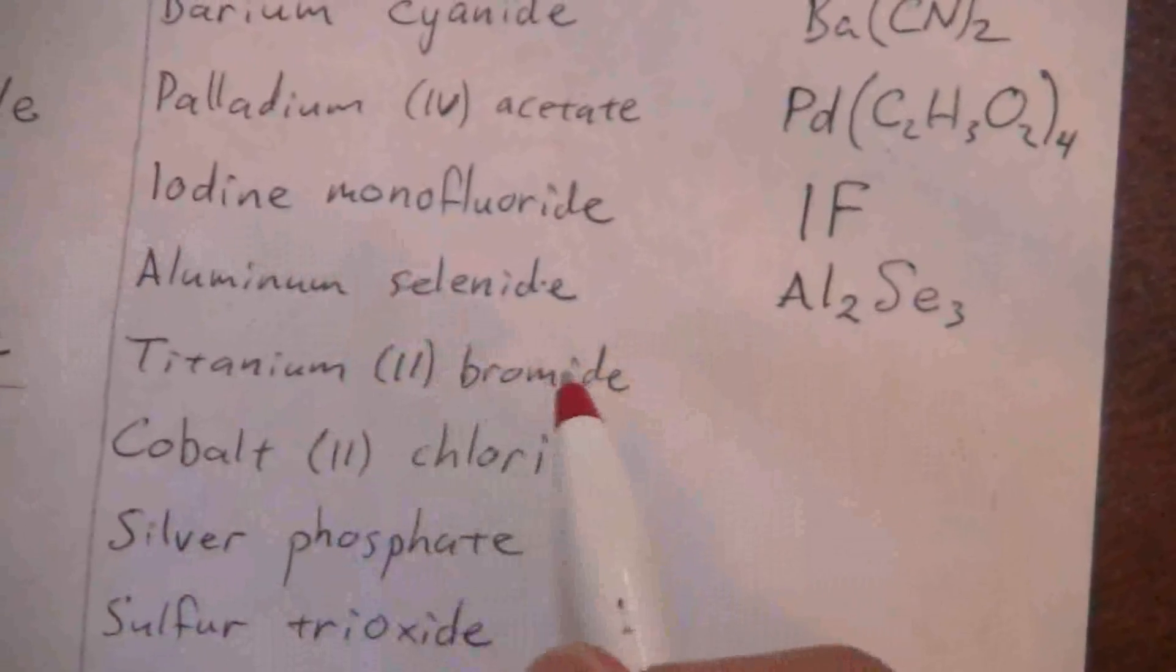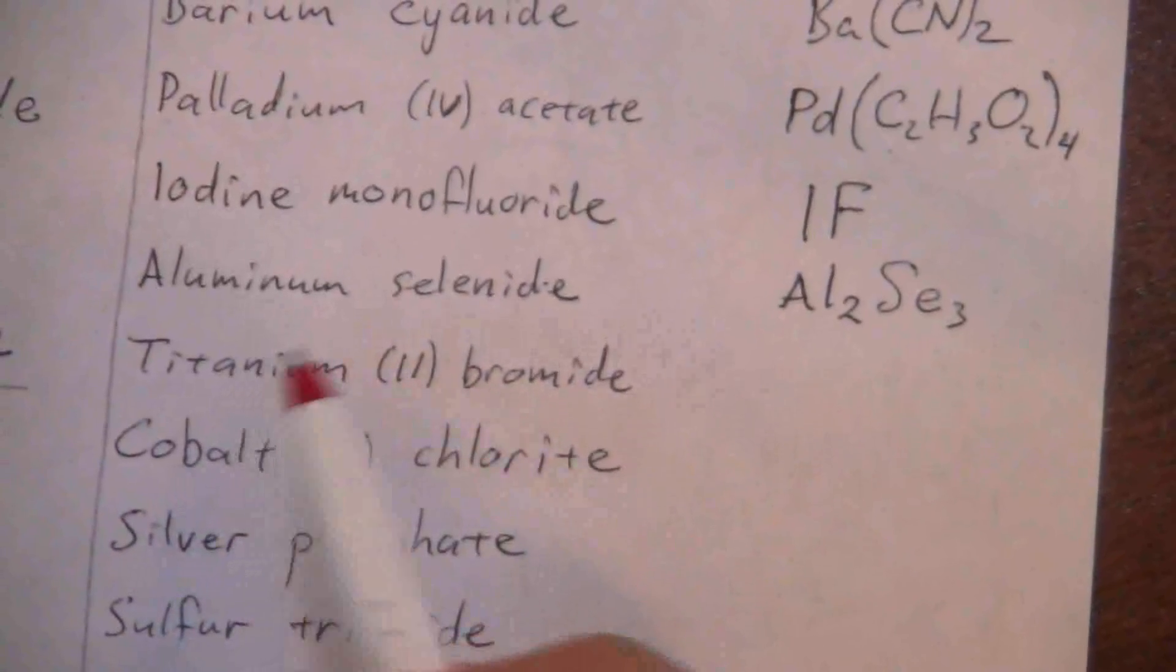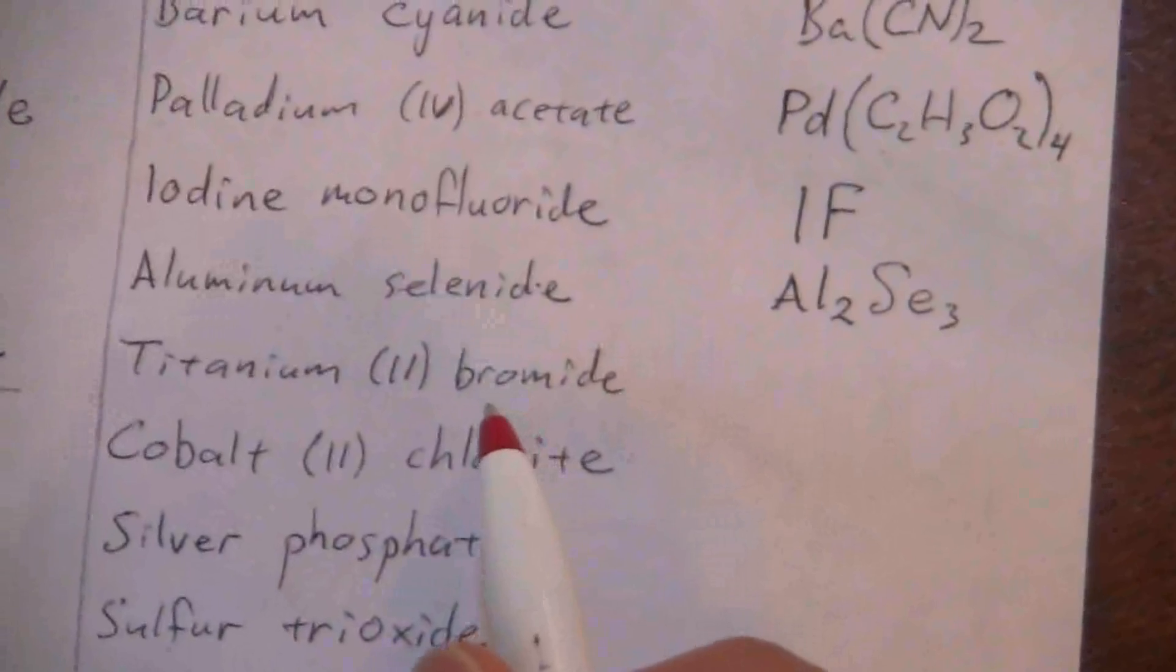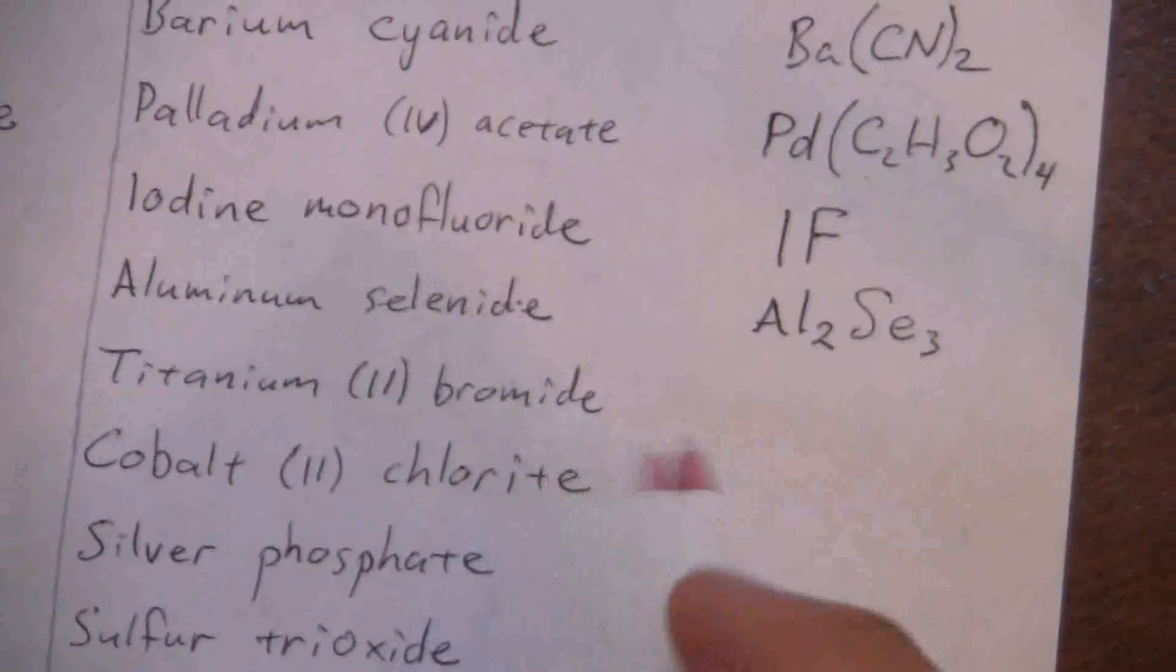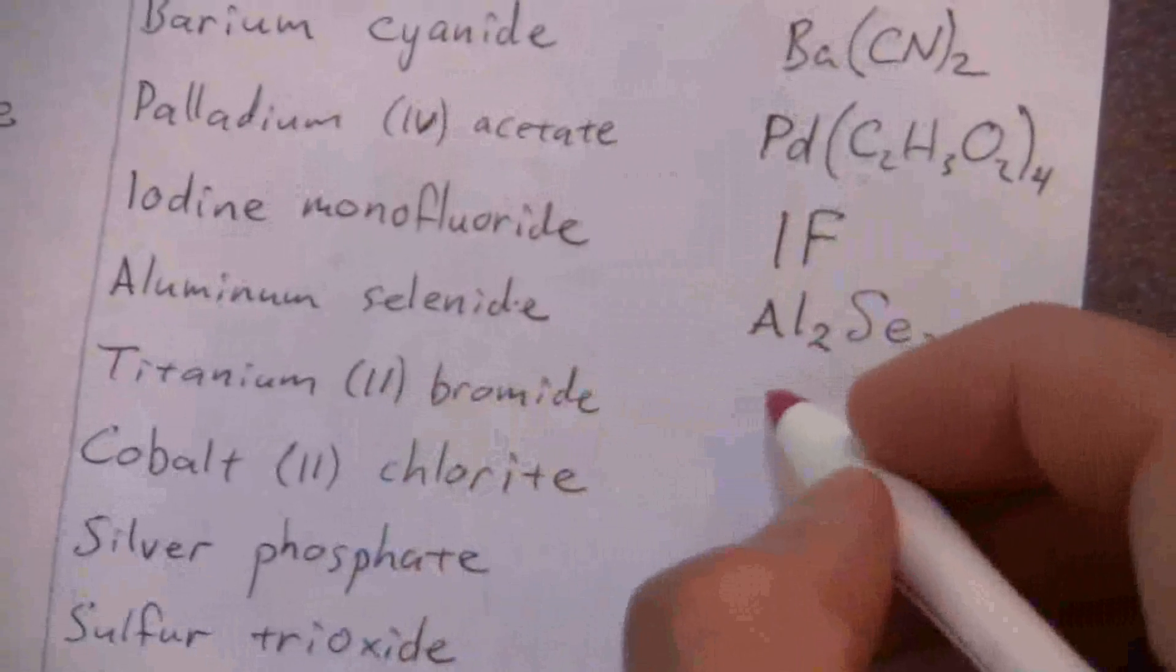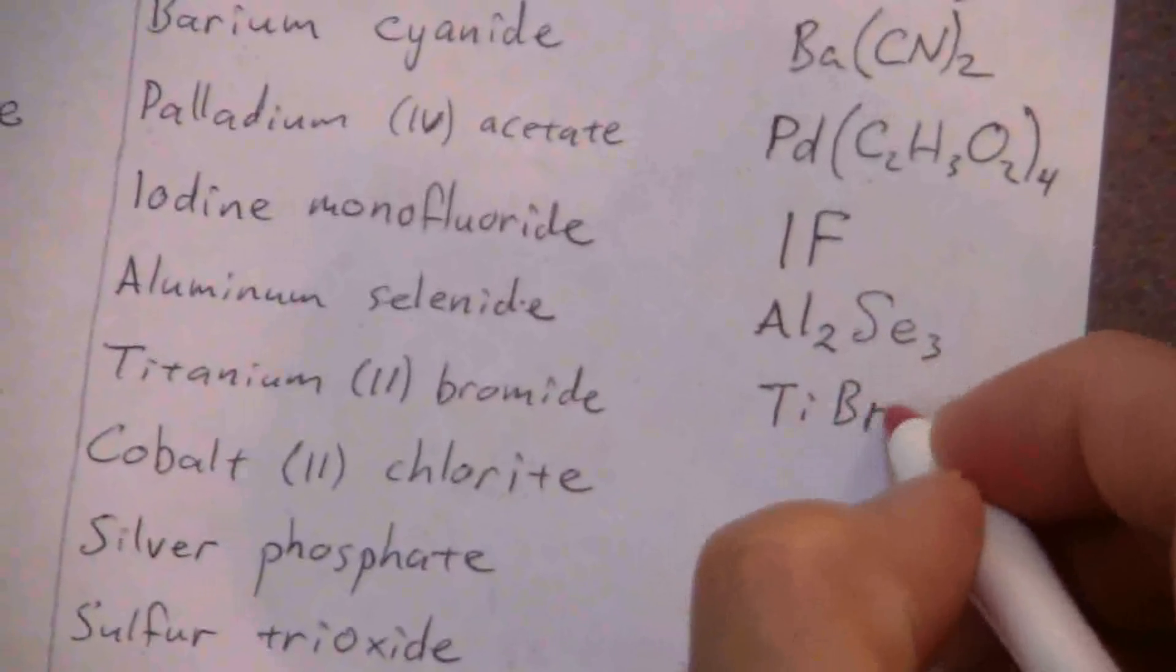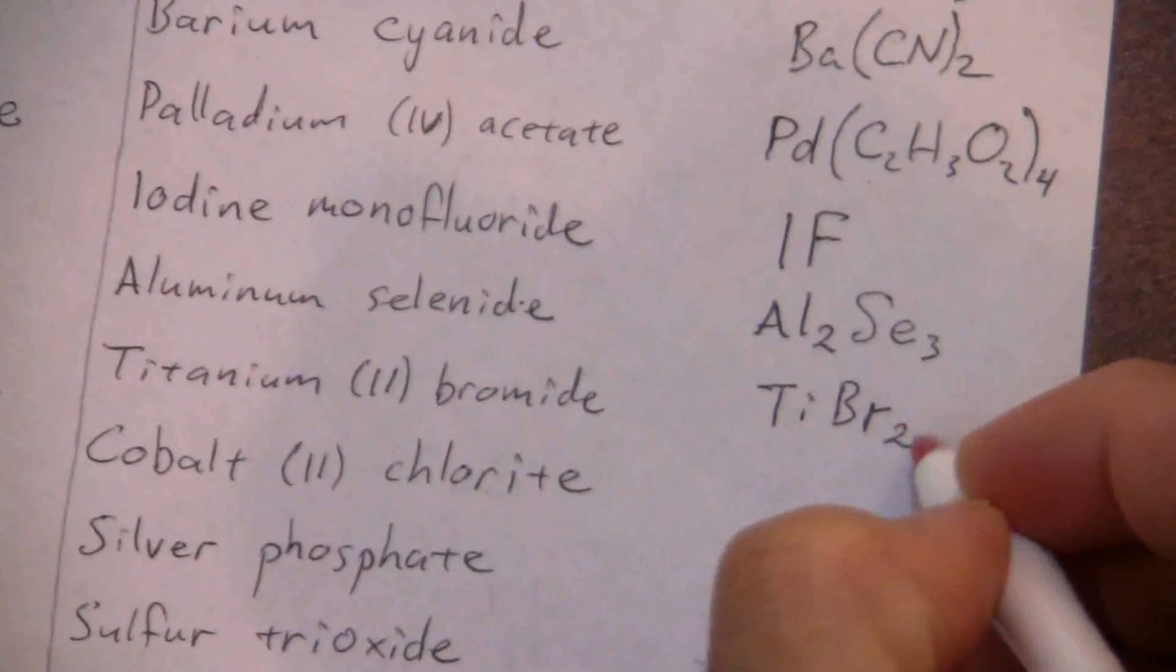Titanium (II) bromide. Here's the charge of my titanium. Bromide is a negative one, it's a halogen. I need a negative two to balance out that positive two, so I need two bromides. That'll be TiBr2.